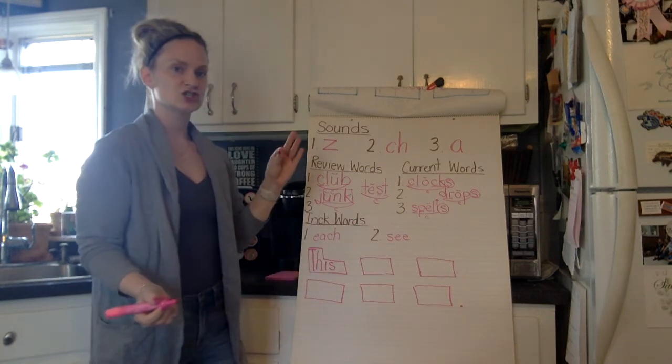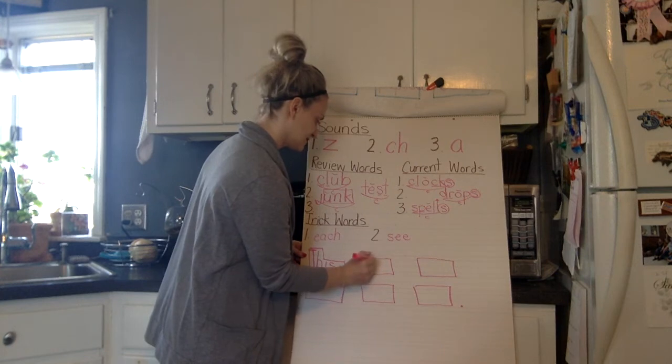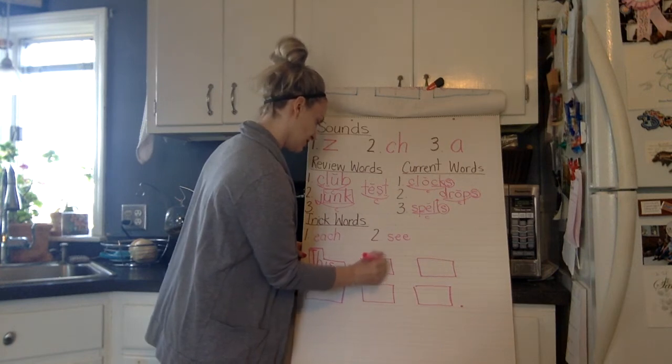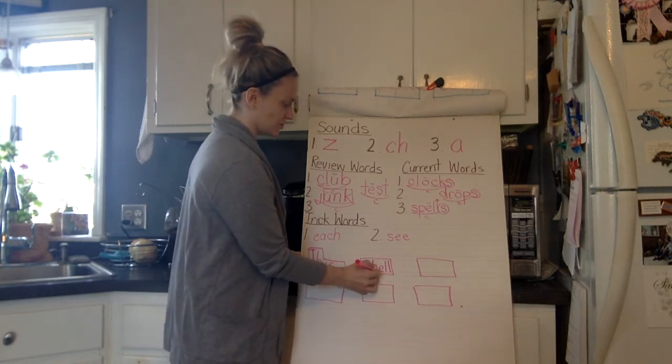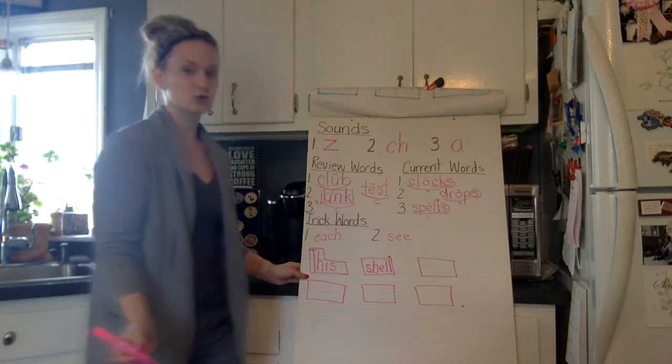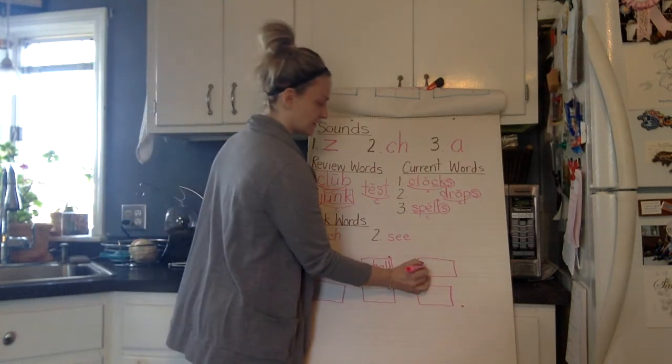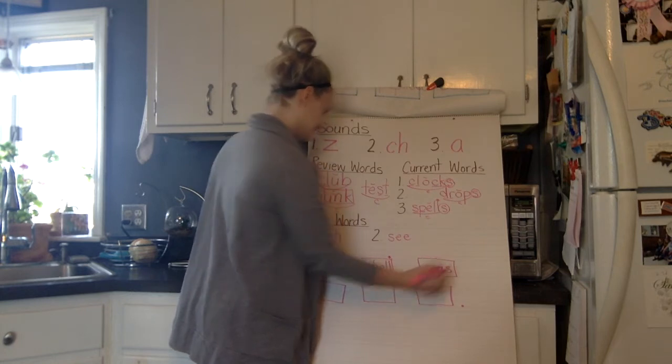All right. So let's start with the word this. Uppercase T-H-I-S. Shell. Shell. Shell. S-H-E-L-L. If we wanted to, you could mark your digraph. You could put a star above your bonus letter. Was. Was is an old trick word. We all should have spelled that one correctly. W-A-S.